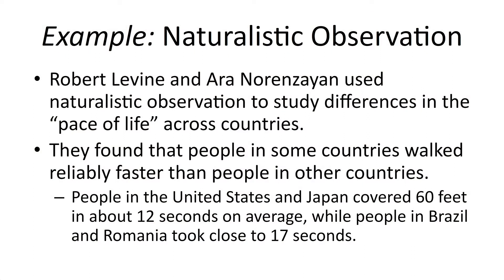Despite its flaws, there have been some classic naturalistic observation studies that were profoundly influential. For example, researchers Levine and Noren Zion used this design to study differences in the pace of life across countries. They traveled the world and found that people in some countries walked reliably faster than others — people in the US and Japan covered 60 feet in about 12 seconds, while people in Brazil and Romania took close to 17 seconds to pass that same mark.